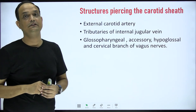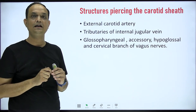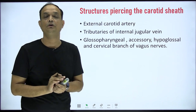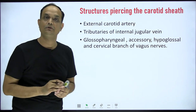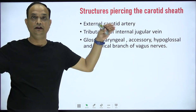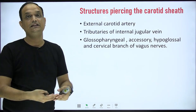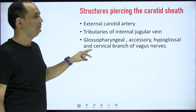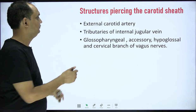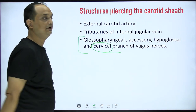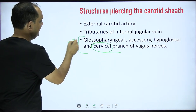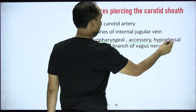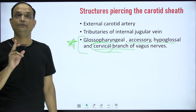What structures pierce the carotid sheath? First, the external carotid artery pierces and exits it, as it arises from the common carotid inside the sheath and comes out. Second, tributaries of the internal jugular vein pierce and enter the sheath. Third, apart from the vagus nerve, the remaining cranial nerves — glossopharyngeal, accessory spinal, and hypoglossal — come out along with the cervical branch of the vagus nerve, and these pierce the carotid sheath.